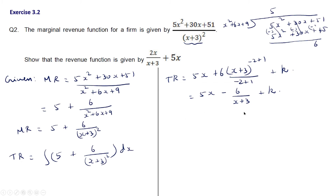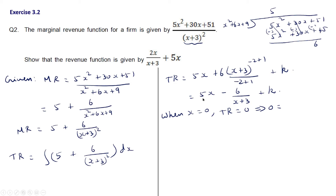We need to eliminate k. We know that when x = 0, total revenue = 0. Substituting: 0 = 0 - 6/(0+3) + k, which gives 0 = -6/3 + k = -2 + k. Therefore k = 2.